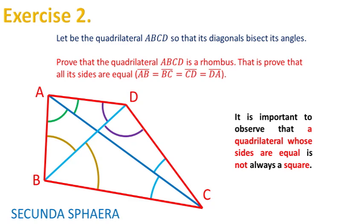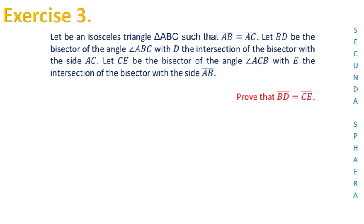Moving on, we have the third exercise. Let ABC be an isosceles triangle such that the sides AB and AC are equal. Let BD be the bisector of the angle ABC, with D the intersection of the bisector with the side AC. Let CE be the bisector of the angle ACB, with E the intersection of the bisector with the side AB. The problem asks us to prove that the segments BD and CE are equal.